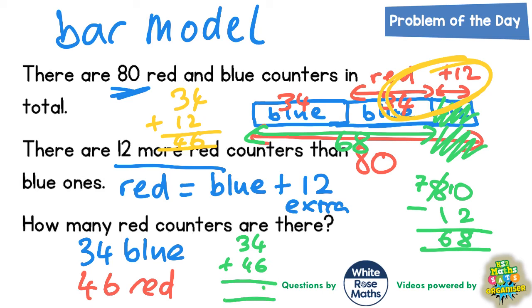4 plus 6 is 10. Put the 0 in, carry the 1. 3 plus 4 plus 1 is 8. So yes we do have 80 red and blue counters in total so we can tick that clue off.